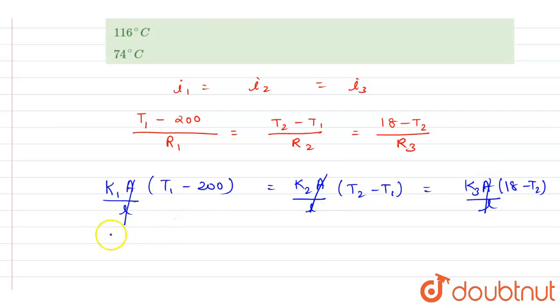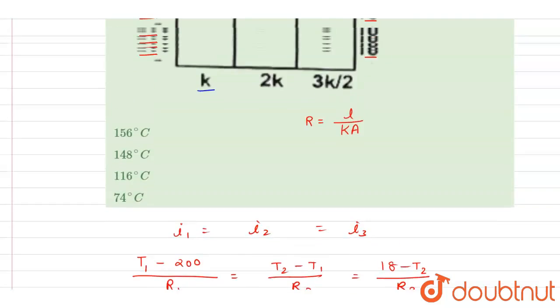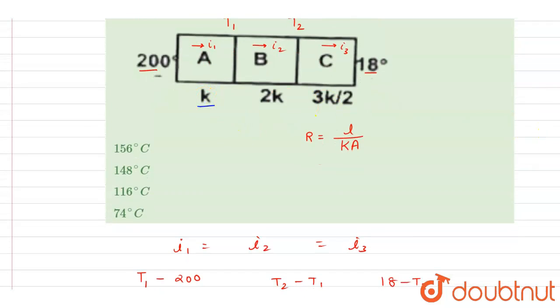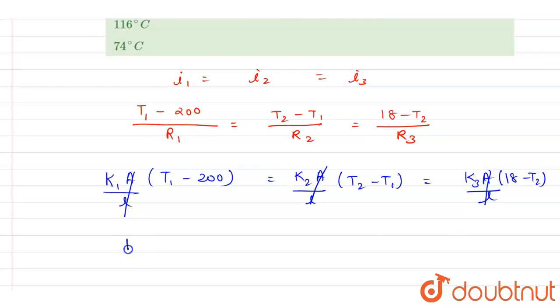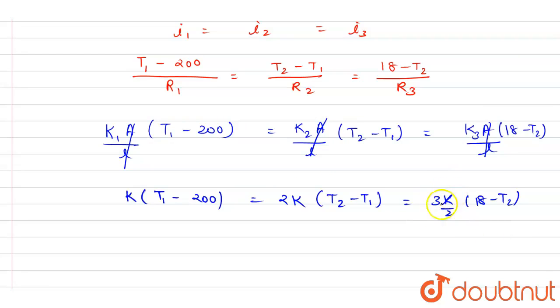We will write down this equation. If you see the k1, k2, k3 are already given, it is k, 2k, and 3k by 2. So you can just write down it is k, 2k, and this is 3k by 2. If you see here this k will get cancelled out.